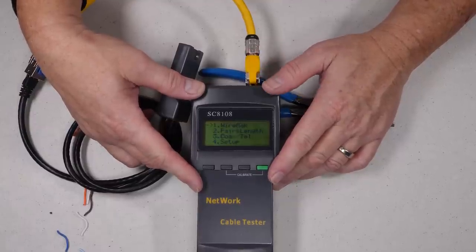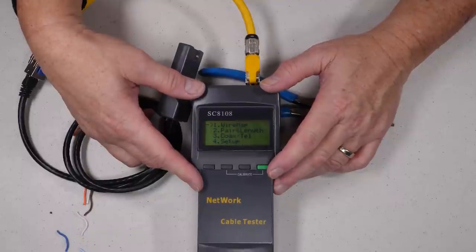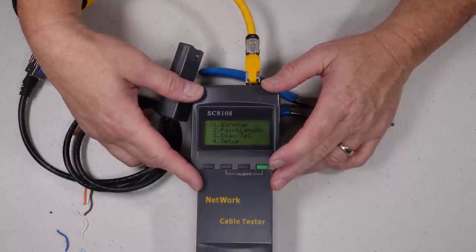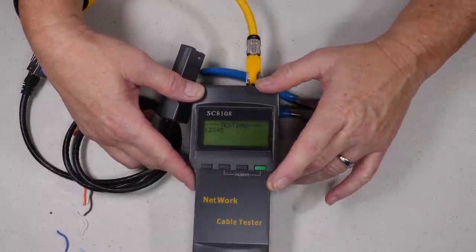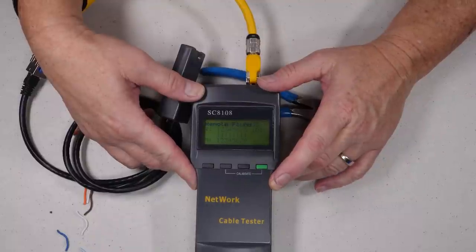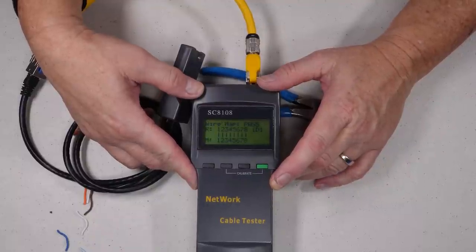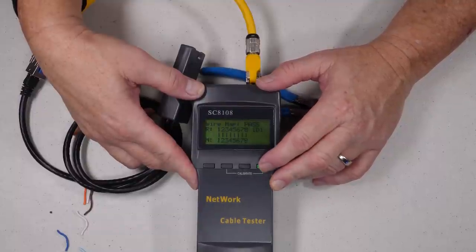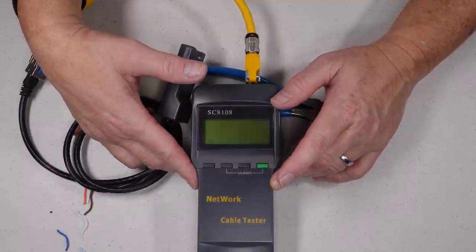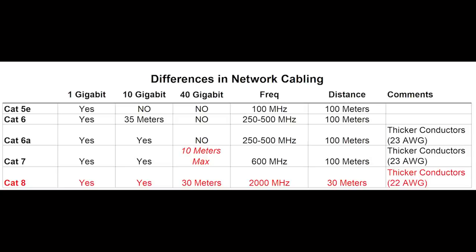Obviously, I can't test for 40 gigabits right now, but I'll run a conductivity test to verify the workmanship is good. As you can see, we passed the conductivity test, which means we wired it up correctly. At least we've confirmed this thing was put together right.